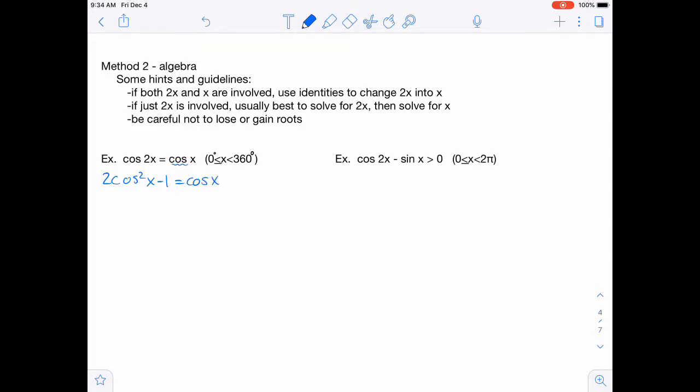And then I'll bring the cosine on the right over to the left so that it's all on one side, leaving us with 0 over there. And then we're going to factor that. So that factors into 2 cosine x and cosine x. And then here we'd have a plus 1 and a minus 1.